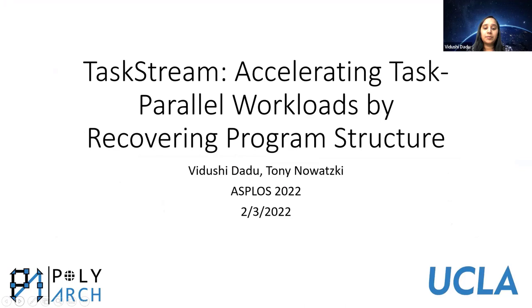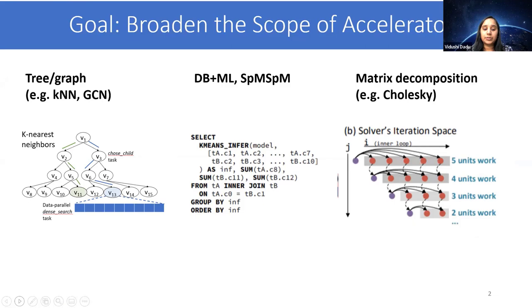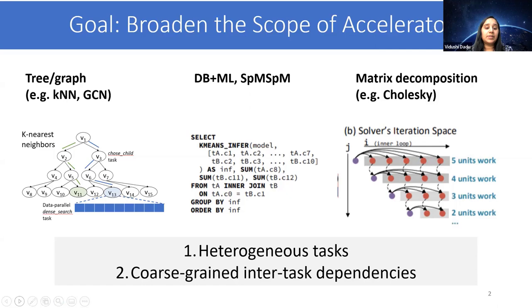Our goal in this work is to broaden the scope of accelerators to workloads with irregular parallelism. These include tree and graph workloads, databases, and matrix decomposition. The common properties across these workloads are heterogeneous tasks of variable size and resource requirements, and inter-task dependencies.